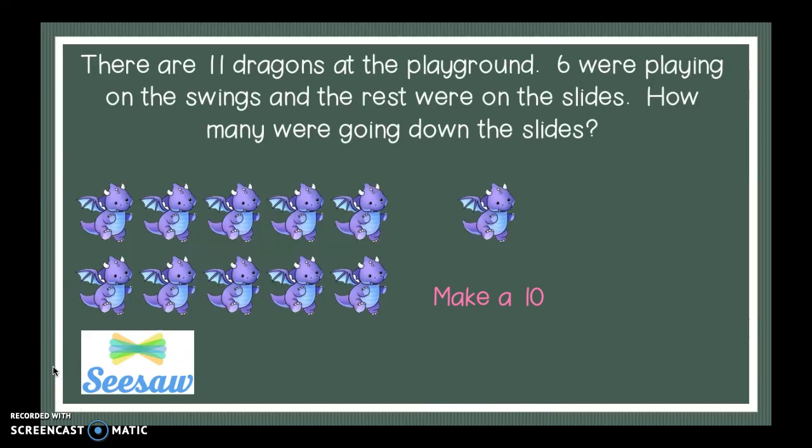Then, the first thing I want you to do is I want you to draw your 11 dragons and then make a 10. I want you to write a number sentence that would go along with you subtracting the ones that were playing on the swings. So your first number sentence should say 10 minus something equals something. Then, after you make your 10, I want you to add the remaining parts after you've subtracted. So you should have an addition that says blank plus blank equals. And then your amount that it will equal will be how many were going down the slides. Make sure you have two good number sentences and a drawing to match it to show your good thinking. All right, Seesaw when you're done. Good luck, friends.